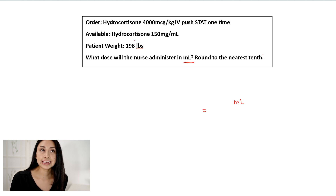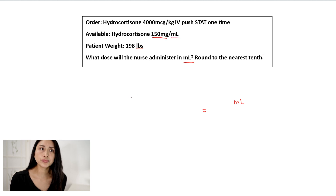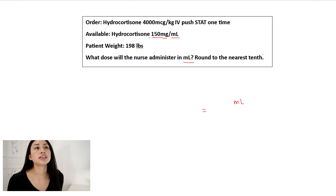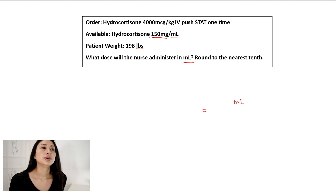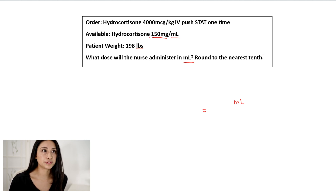Do I see anything in the information provided that will give me milliliters? I do — I see under available that I have 150 milligrams per milliliter. That means that for every one milliliter — like if you were to look on a vial or even a medicine cup — for every one milliliter, I have a 150 milligram concentration of the medication. So that's how the medication comes.